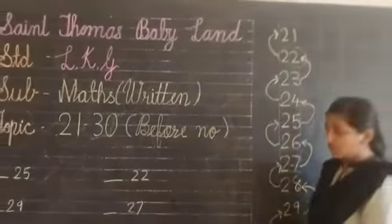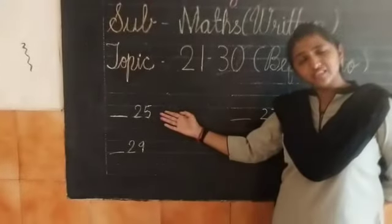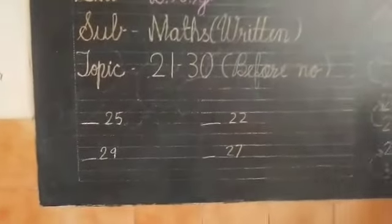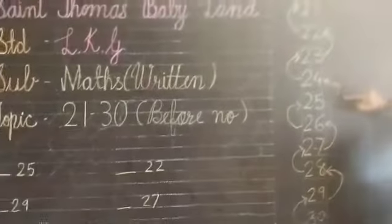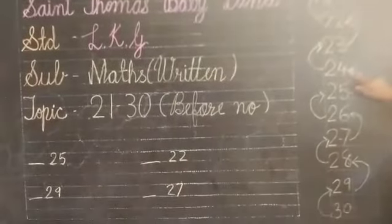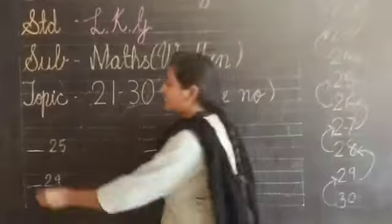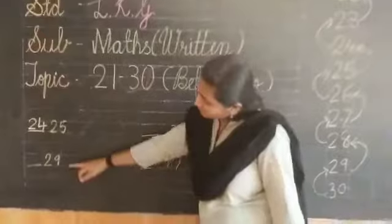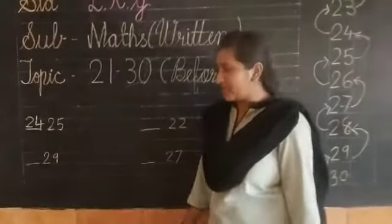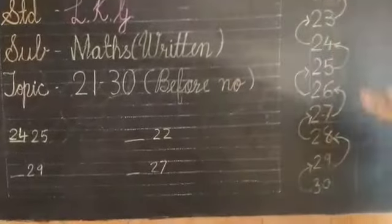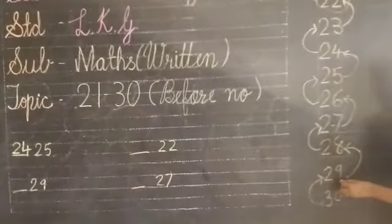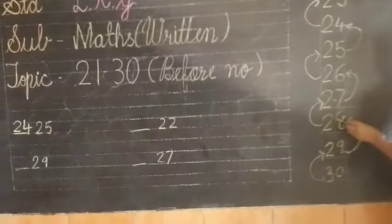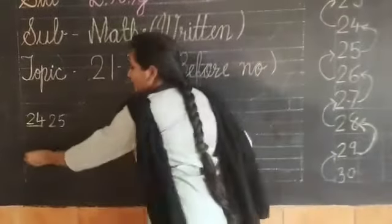So children, which number is this? 25. And 25, before is 24. Same. So children, which number is this? 29. 29, before is 28. Same. 28. So our answer is 28. 28.